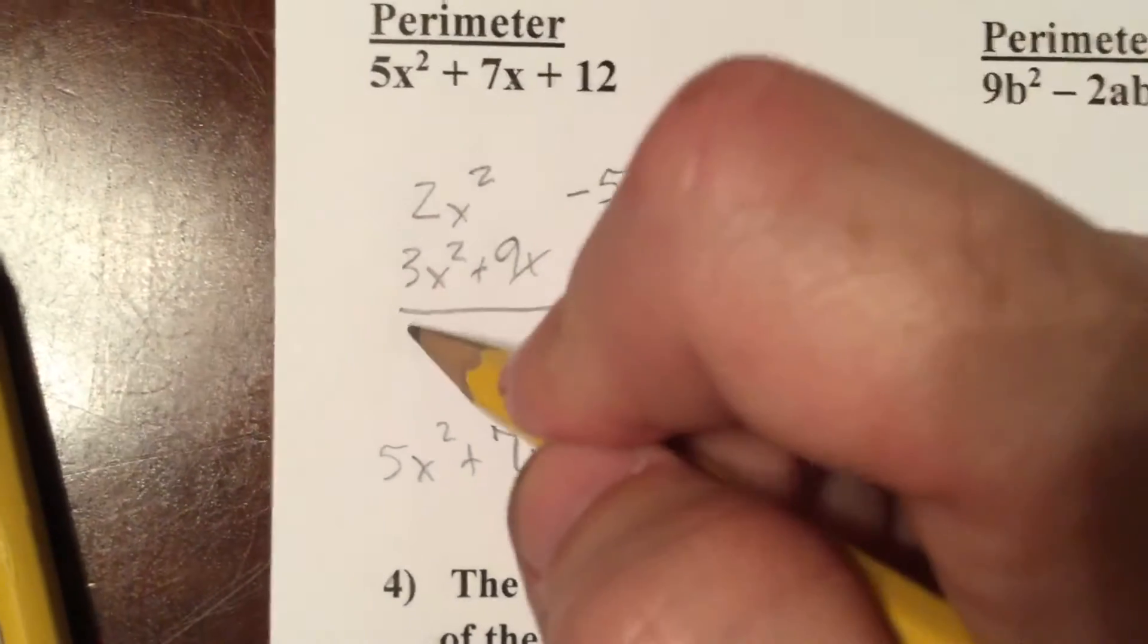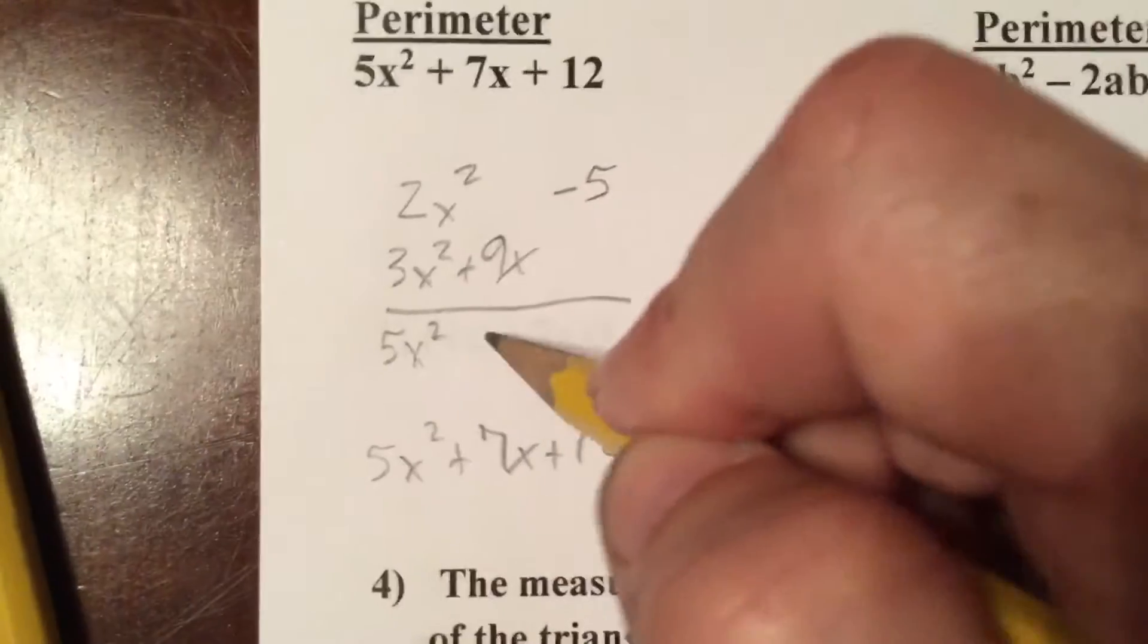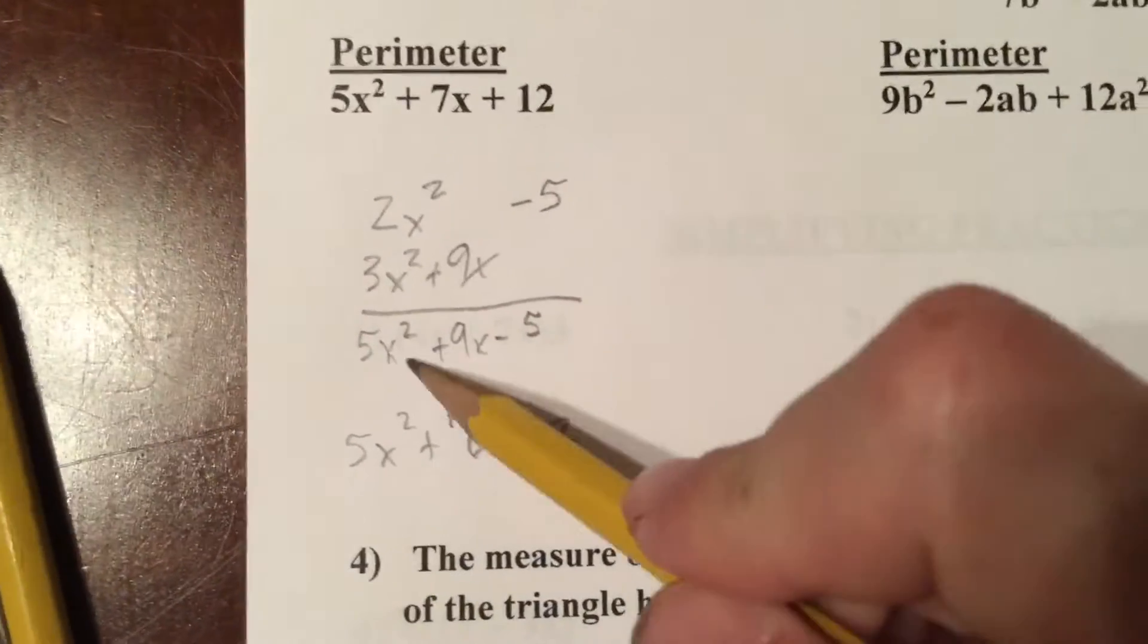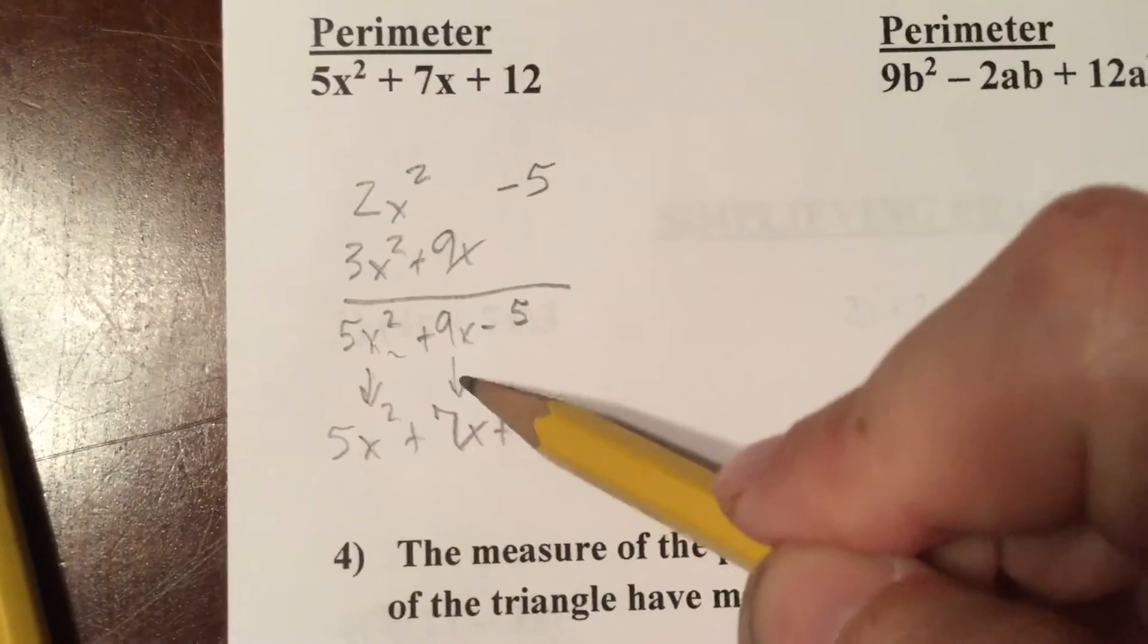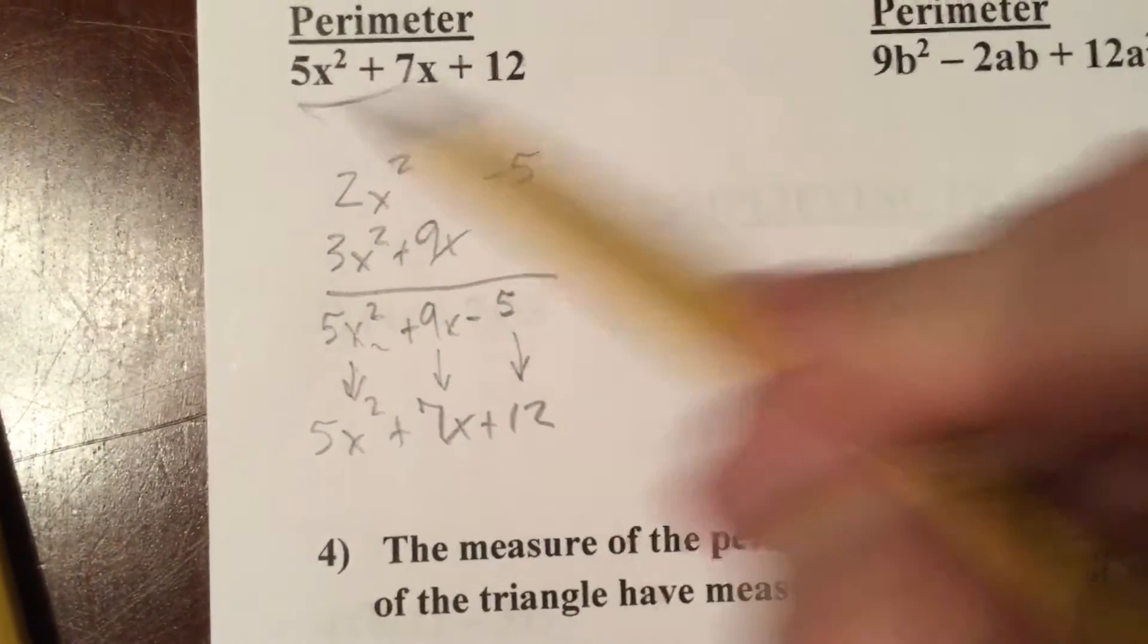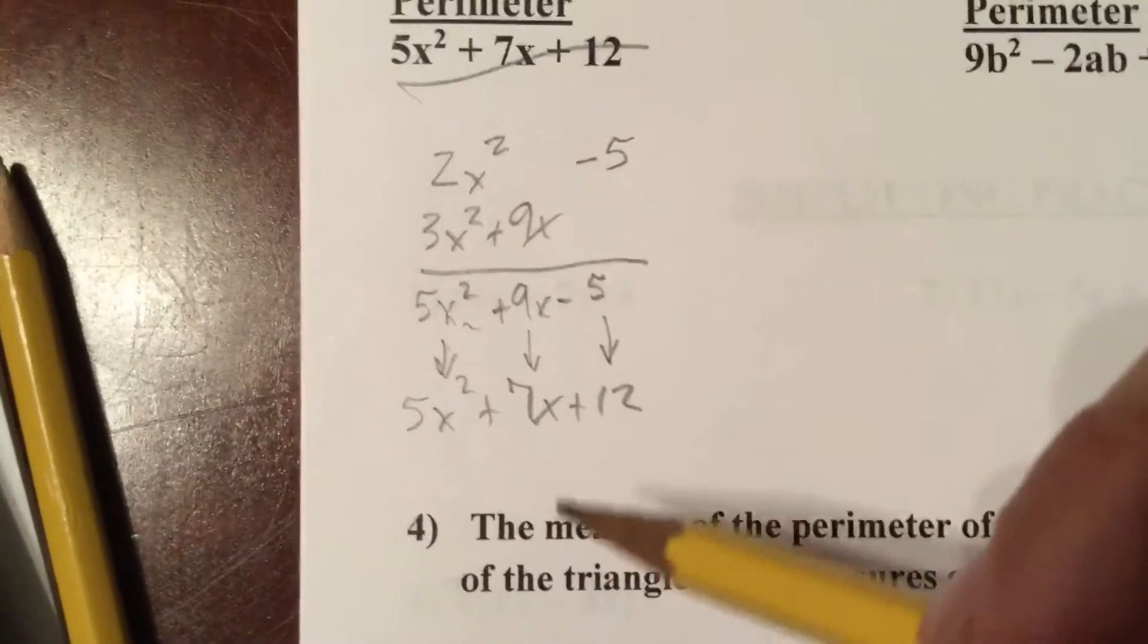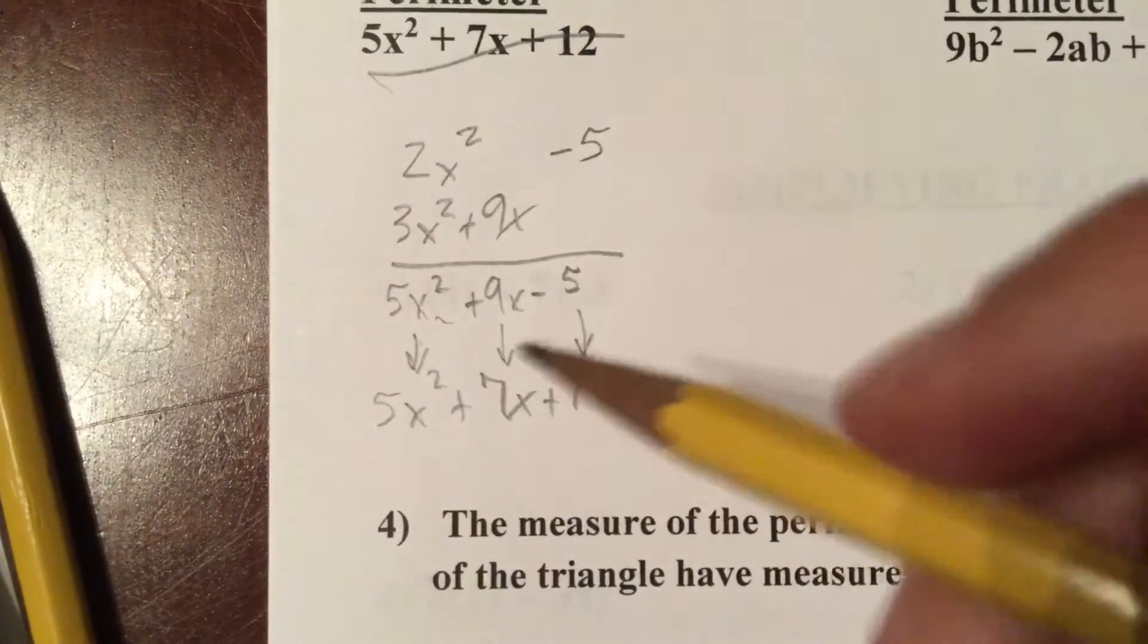So if I add straight down the two sides that I currently know, this is what I have. Now I want to look at how does this change from the final perimeter answer to what I currently have when I add two sides.